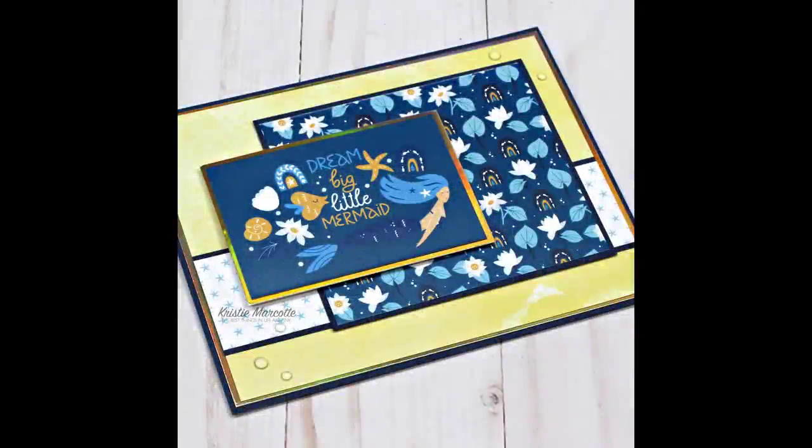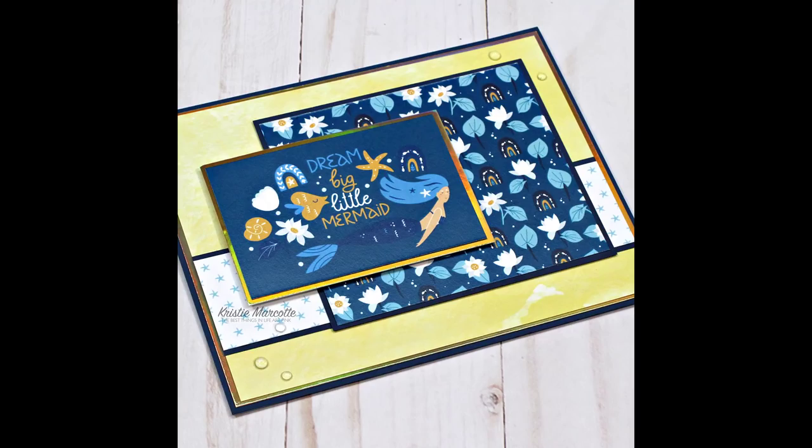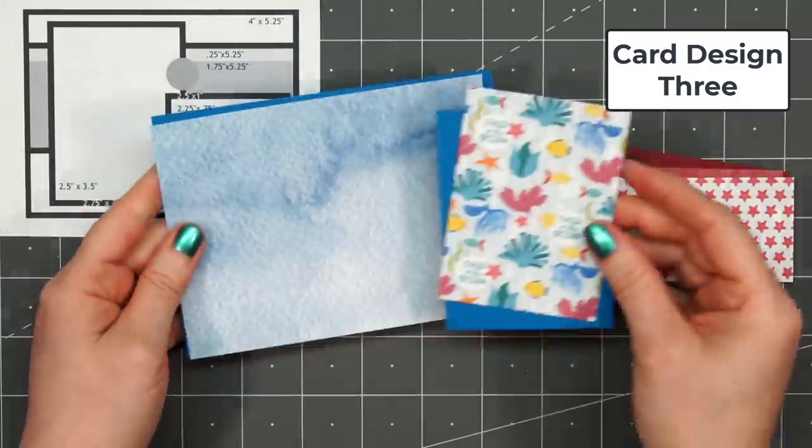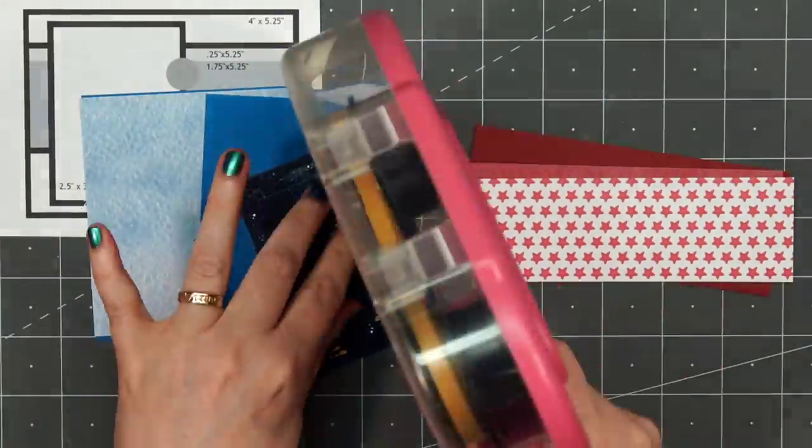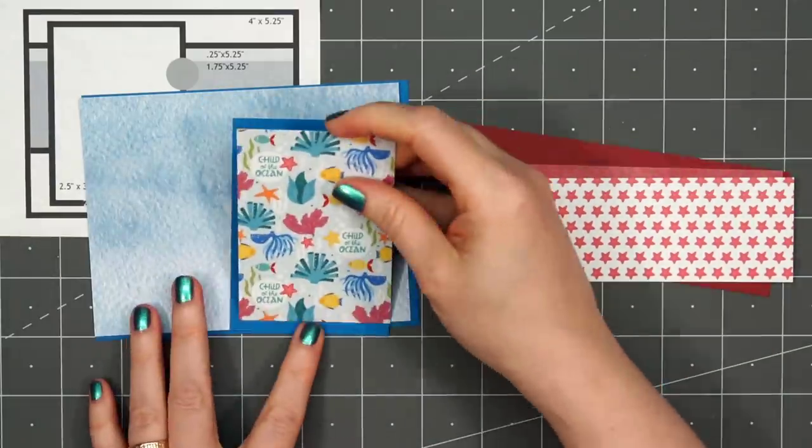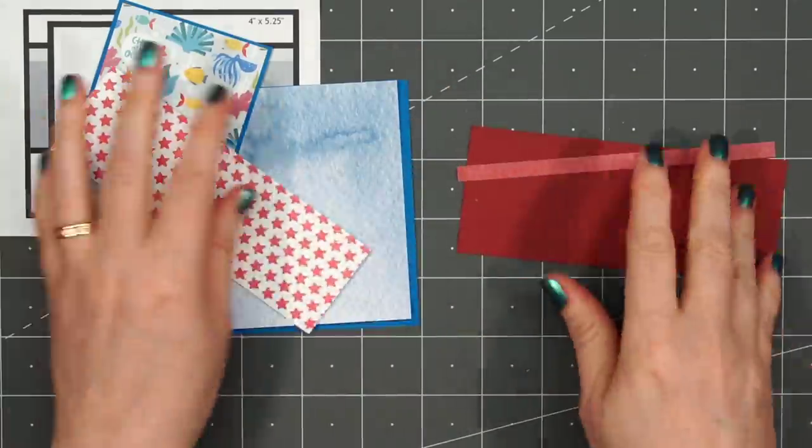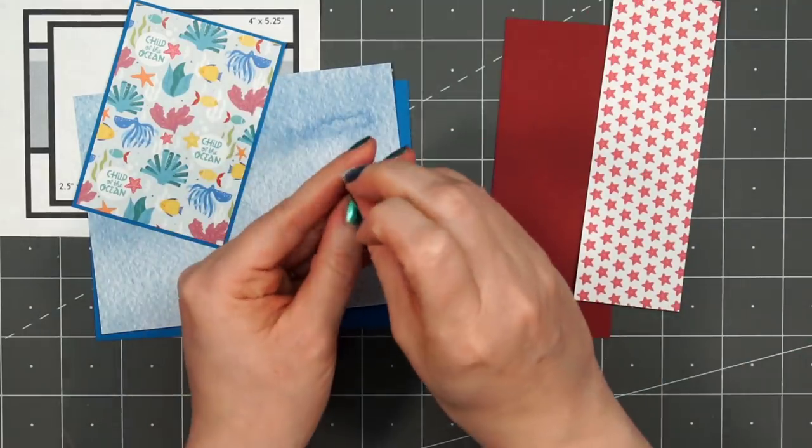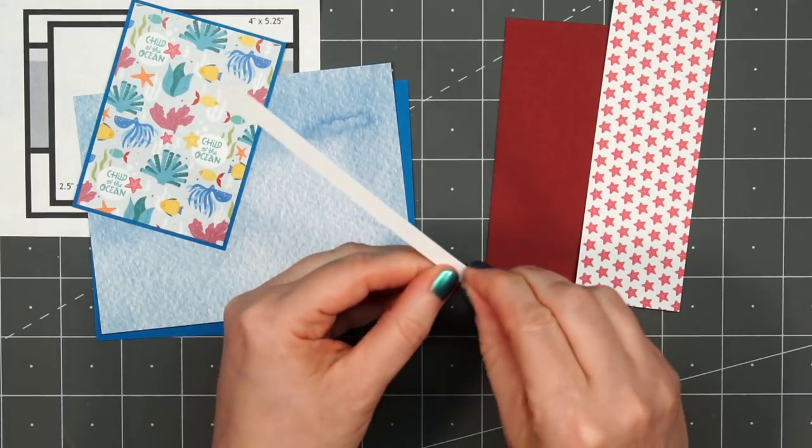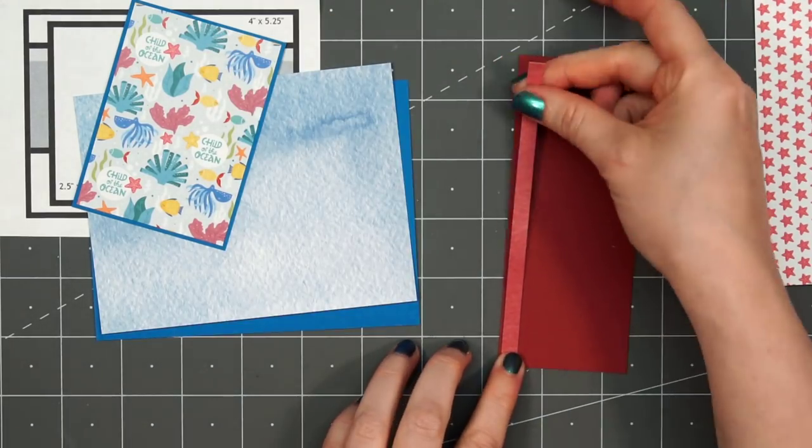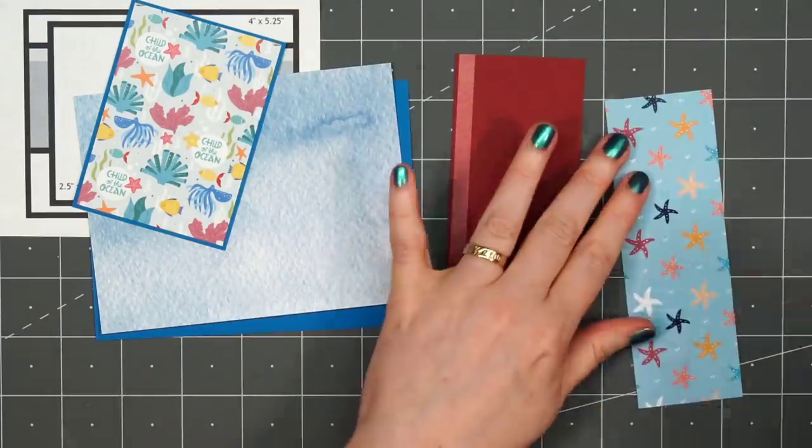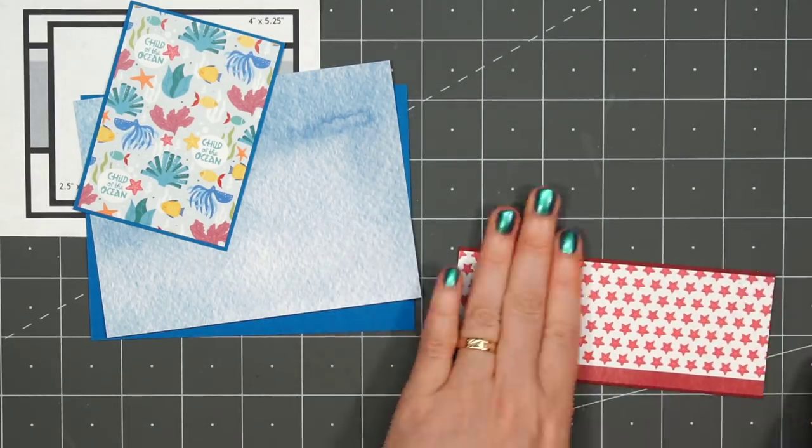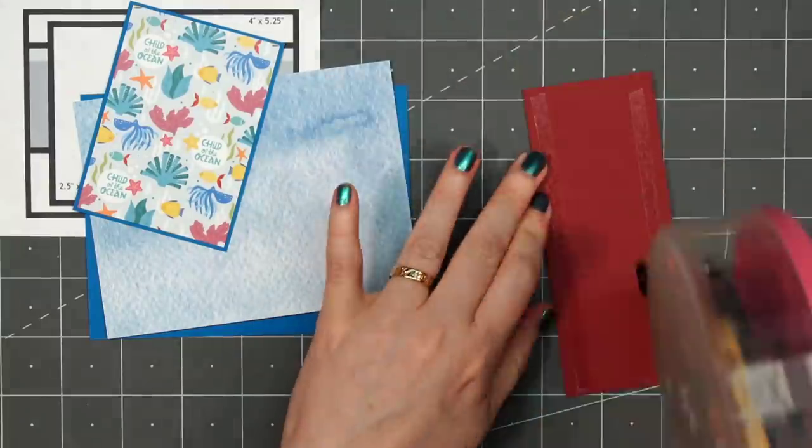Now moving on to card design number three. I'm using a card sketch from OWH. This is number 200. This is a fun sketch since you can feature an image or some pattern paper in that small rectangle and it also has the area for your sentiment. I'm using some of the blue watercolor paper for the background. Then I have this fun underwater scene for that smaller rectangle and it has the sentiment child of the ocean. I think that's really fun. I'll be layering everything on some blue cardstock and for the wider strip that goes across the card, I'm using the white paper with the small red starfish and then just a thin strip of the red watercolor paper, layering those on some red cardstock.